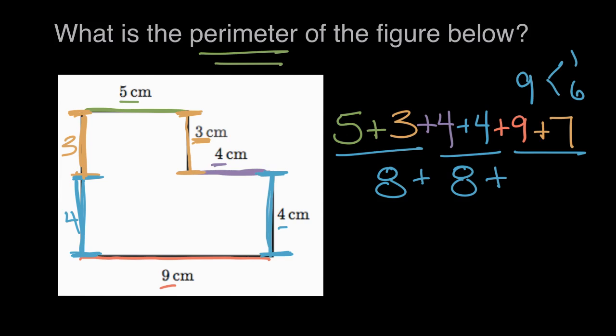Nine plus one is ten, and ten plus six is sixteen. Eight plus eight is another sixteen, so we have a sixteen and a sixteen.